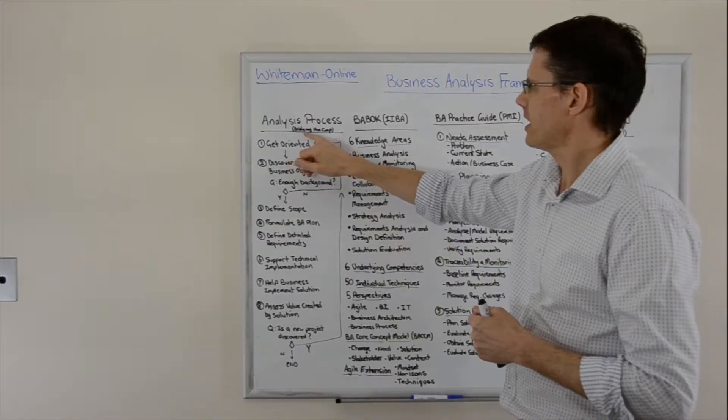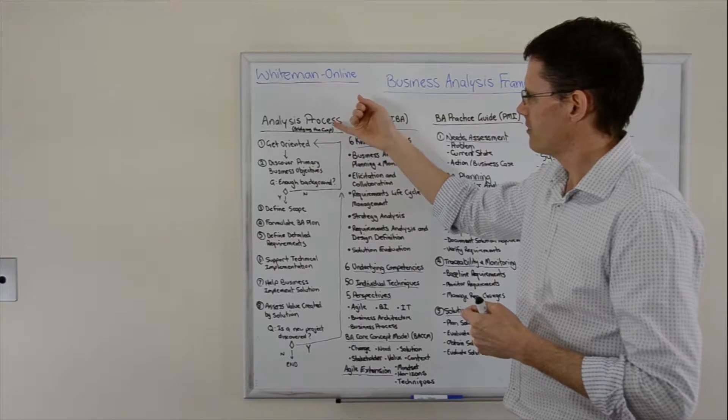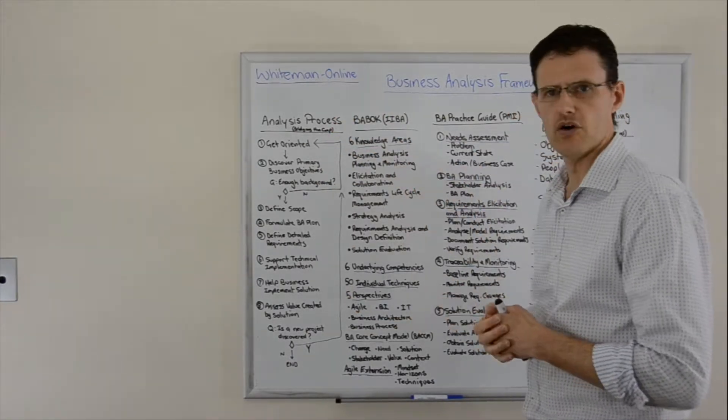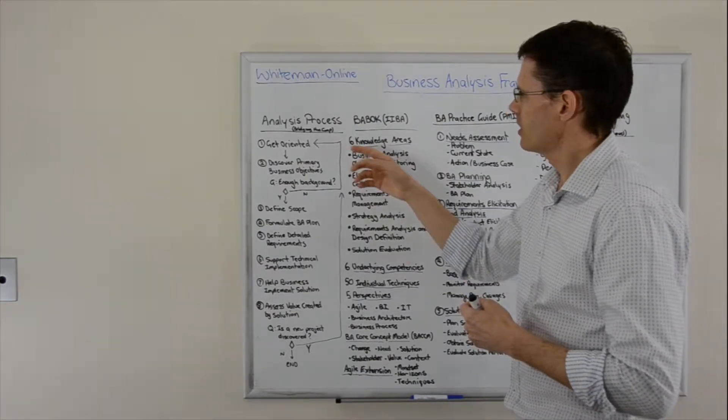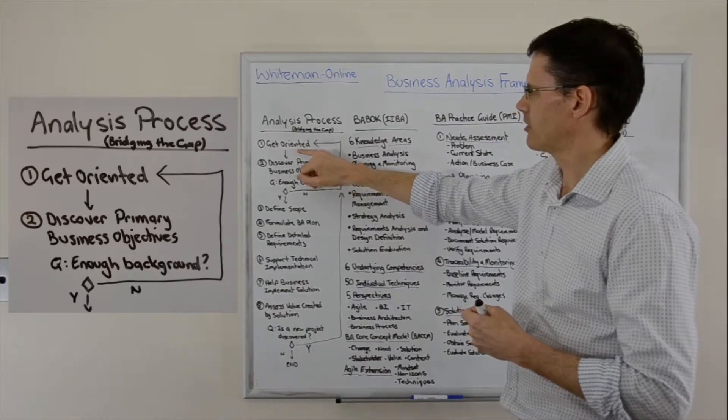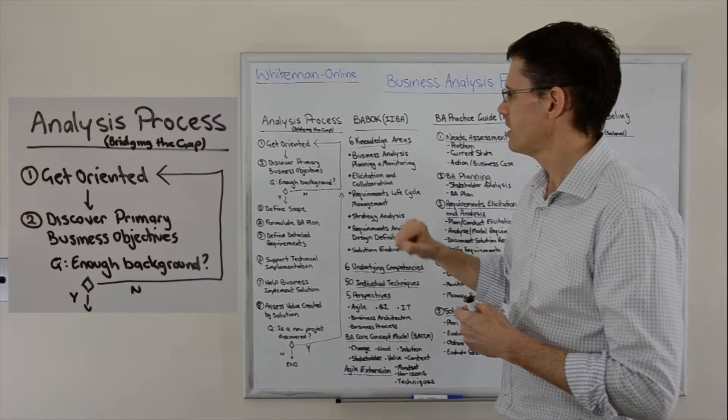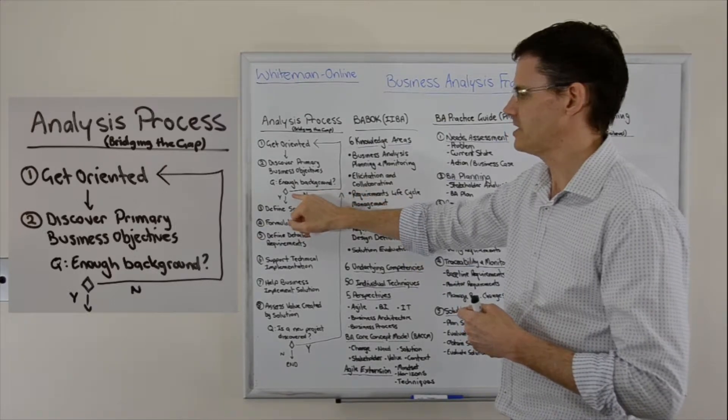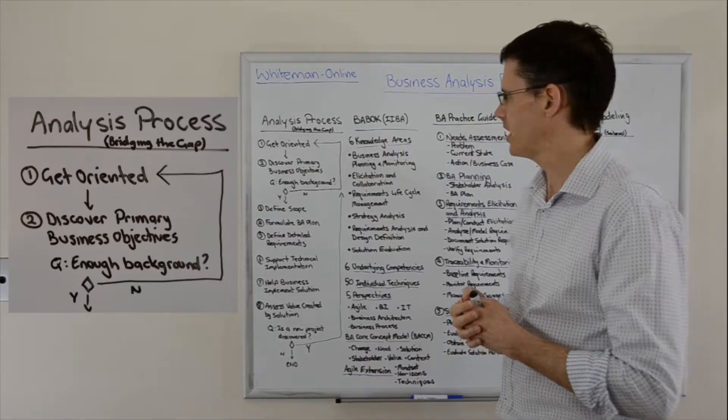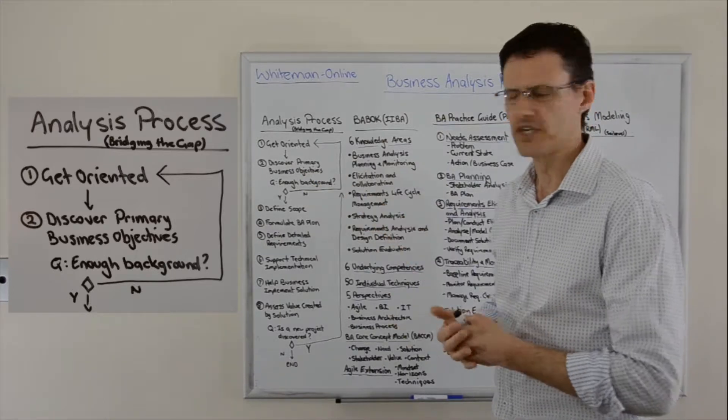We'll start with the analysis process from a company called Bridging the Gap. They define a process rather than a collection of activities. When an analyst first enters an organization, they have a general orientation and discover primary business objectives. They ask: is there enough background to move on with the project and meet the objectives? If not, they cycle through getting oriented and discovering the objectives.